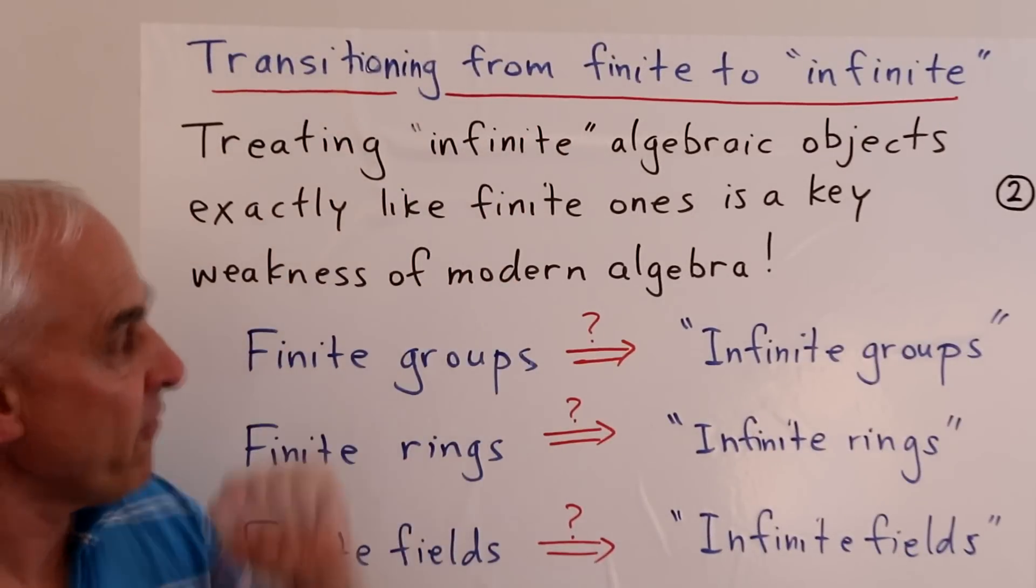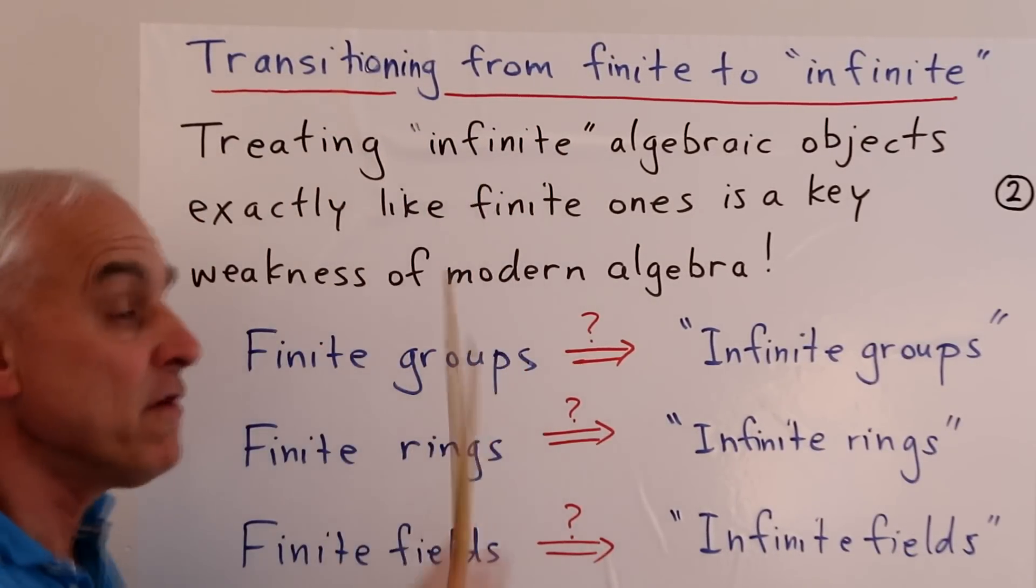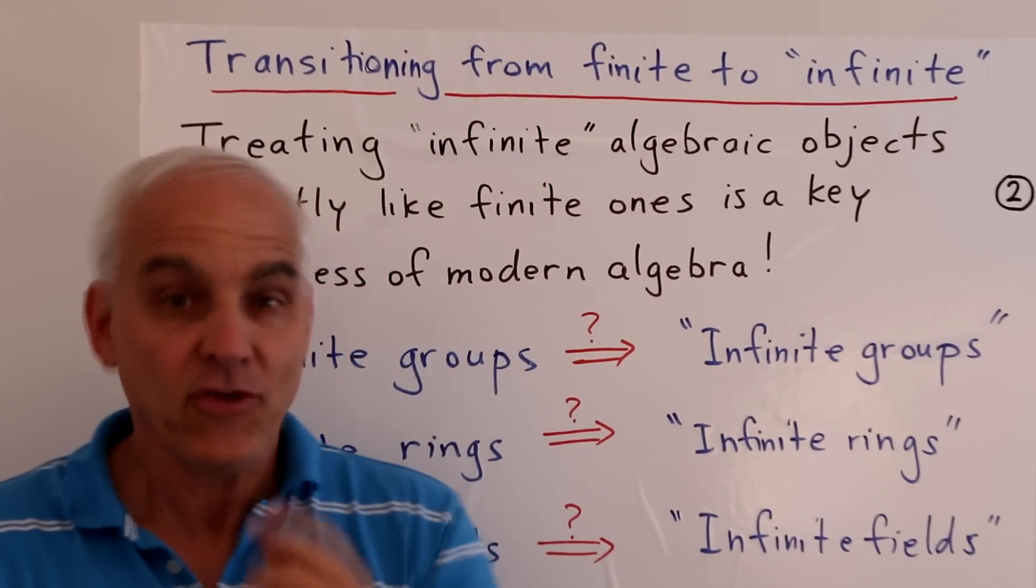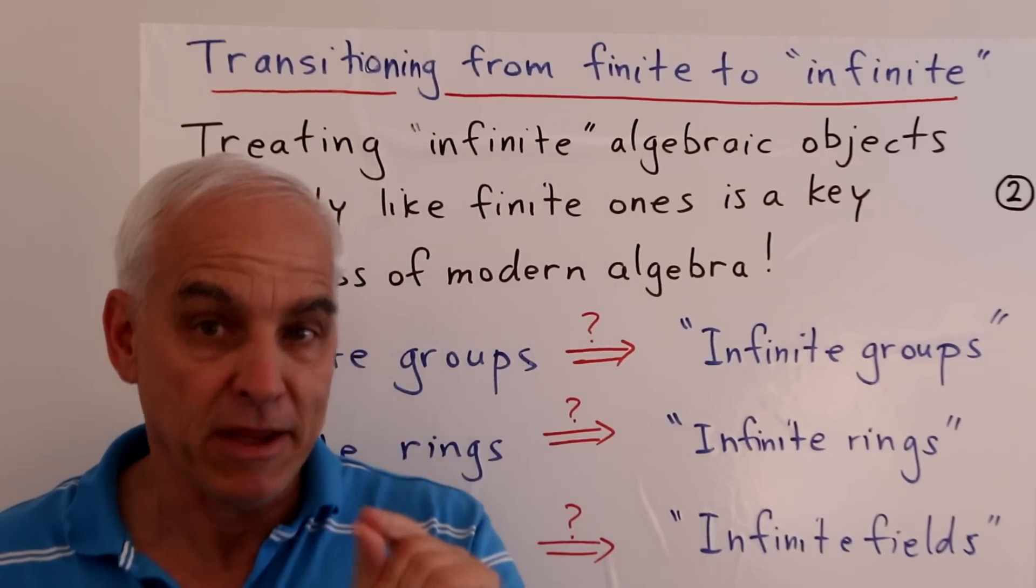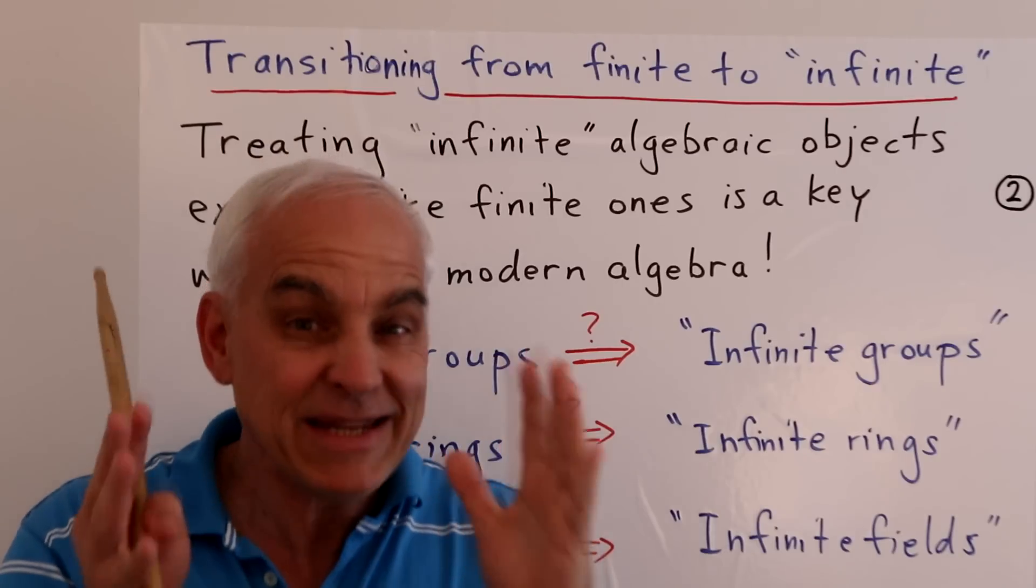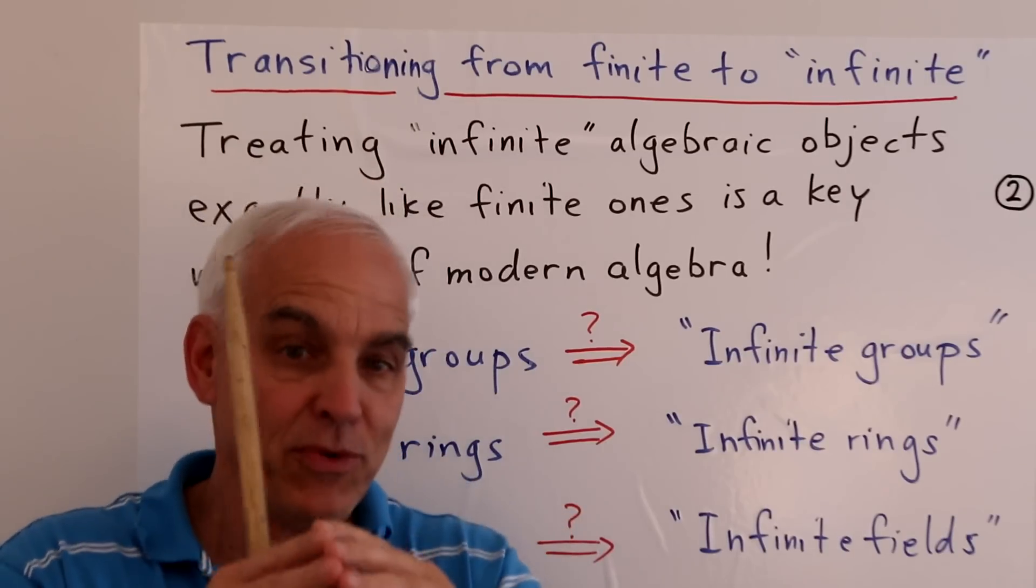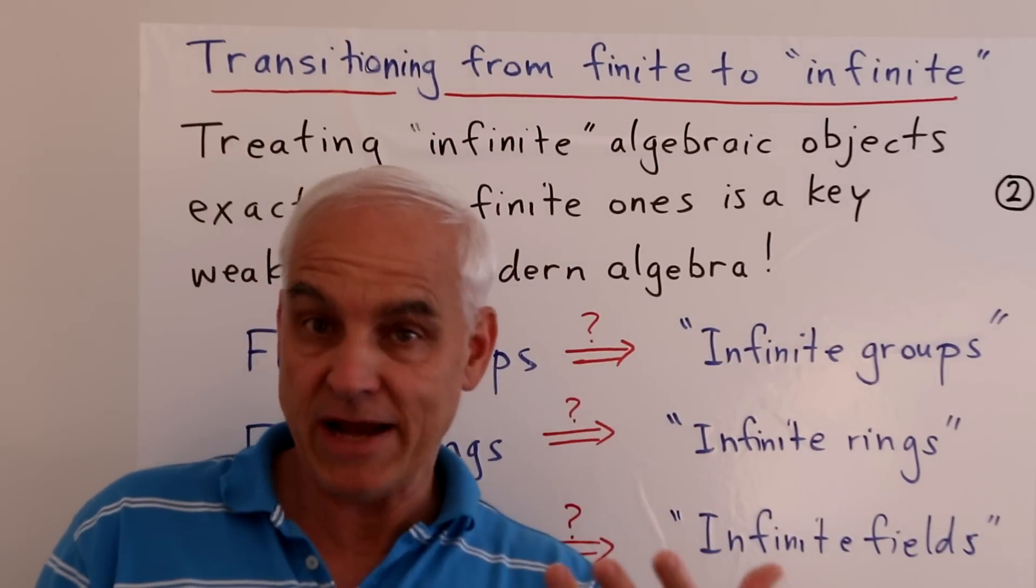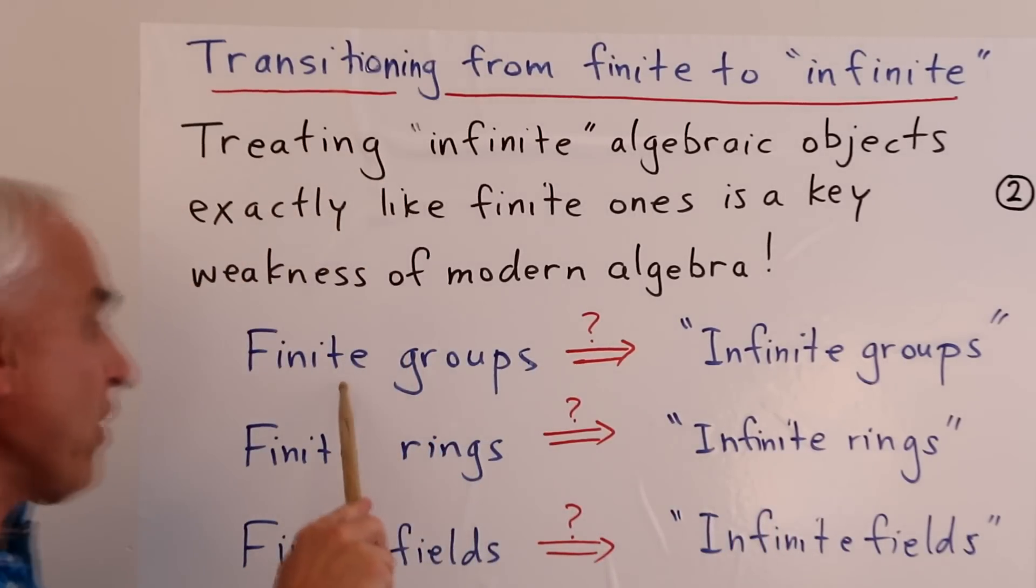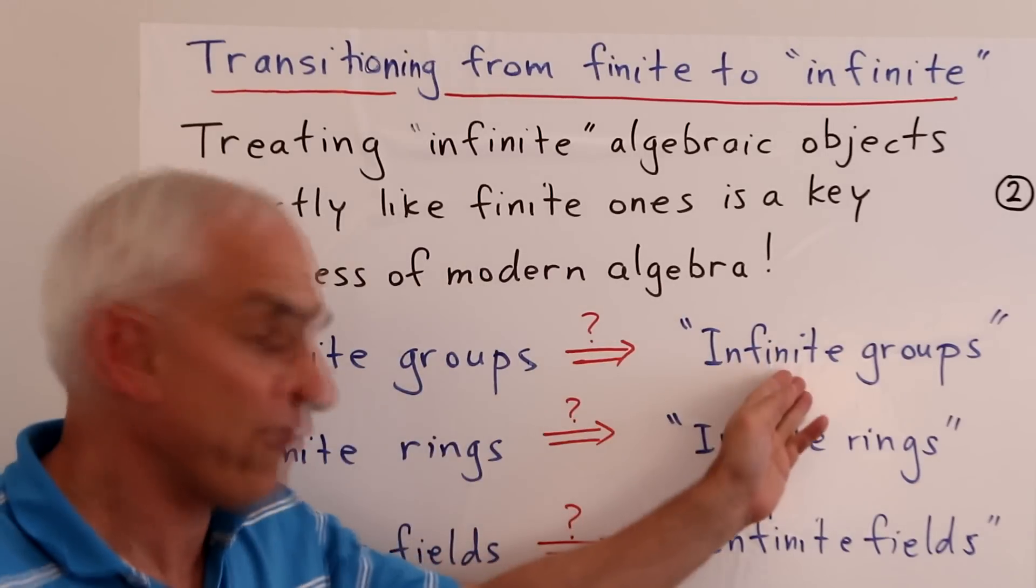So this issue of transitioning from finite to infinite. With current modern algebra, we are often treating infinite algebraic objects with the same framework as finite ones. This is almost invariably a result of sloppy thinking. So the strategy is that if our basic definitions are fuzzy enough and imprecise enough, then yes, we can hope that we cast a big enough net so that both finite and infinite objects are embraced at the same time. But in fact, going from finite groups to infinite groups is a huge step and requires really different, separate thinking.